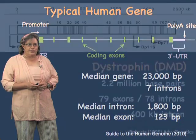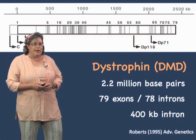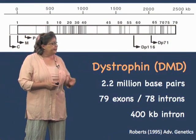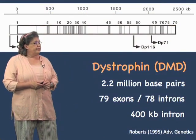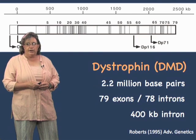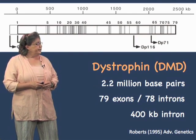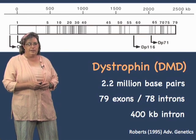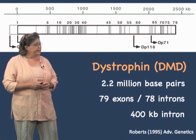Before we talk about that, I want to tell you about a particularly gargantuan gene — the dystrophin gene. Dystrophin encodes a protein that's necessary for your muscles, and mutations in this gene are one of the causes of muscular dystrophy. The DMD gene is the second largest gene in the human genome. It's 2.2 million base pairs long, with 79 exons and 78 introns.